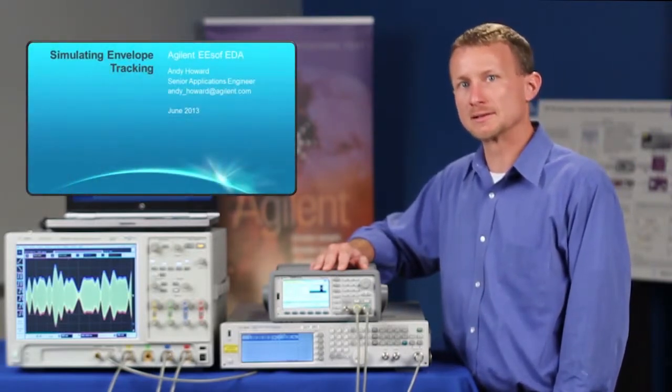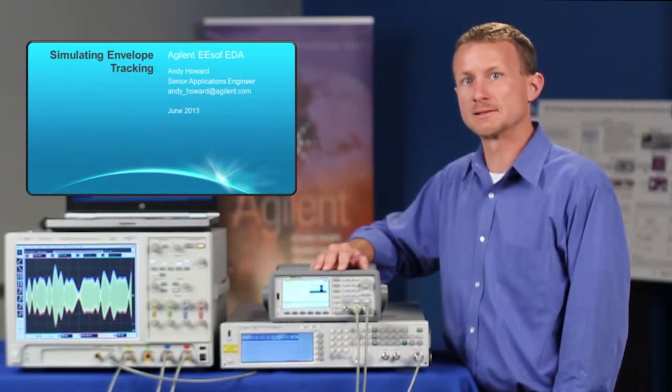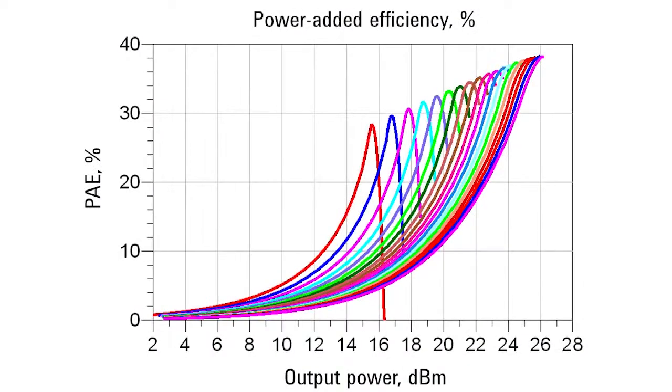To illustrate this concept, we're going to look at a simulation we did using our Advanced Design System software. So let's take a look at the results. The x-axis represents the power amplifier output power, while the y-axis represents the power amplifier efficiency.